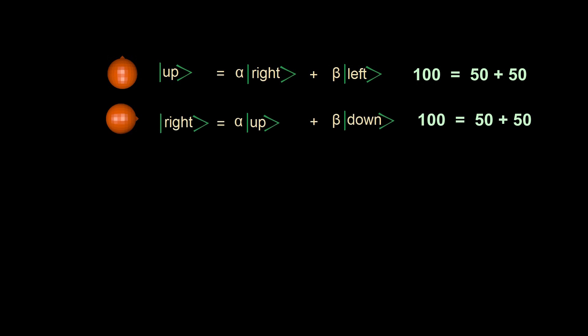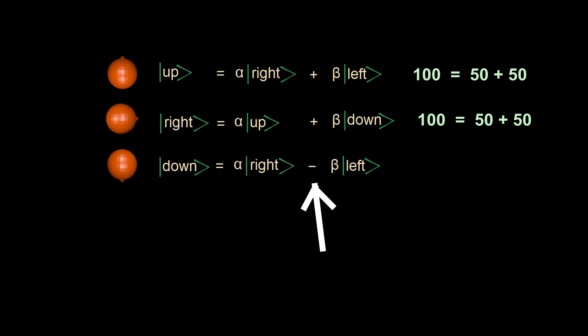Spin right state is the superposition of spin up and spin down states — it is in spin up state 50% of the time and spin down state the other 50% of the time. Spin down is something different: the superposition of spin down is the amplitude of spin right state minus the amplitude of spin left state. How does this minus sign appear here? Where does it come from?